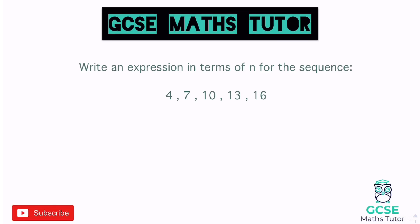This first one says: write an expression in terms of n for the sequence. All we need to find out is what times table it's related to. Looking at the sequence, from 4 to 7 is add 3, and checking the next terms — it's also 3, and again 3. So this is related to the three times table, and the expression for the three times table is 3n.